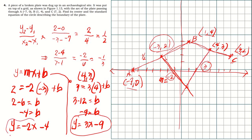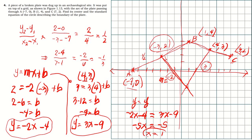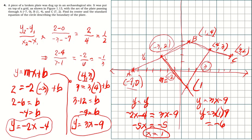Since both equations express y, we equate them: negative two x minus four equals three x minus nine. Solving: negative five x equals negative five, so x equals positive one. Substituting back into y equals three x minus nine gives y equals three times one minus nine, which equals negative six. Therefore, the center of the circle is at one, negative six.